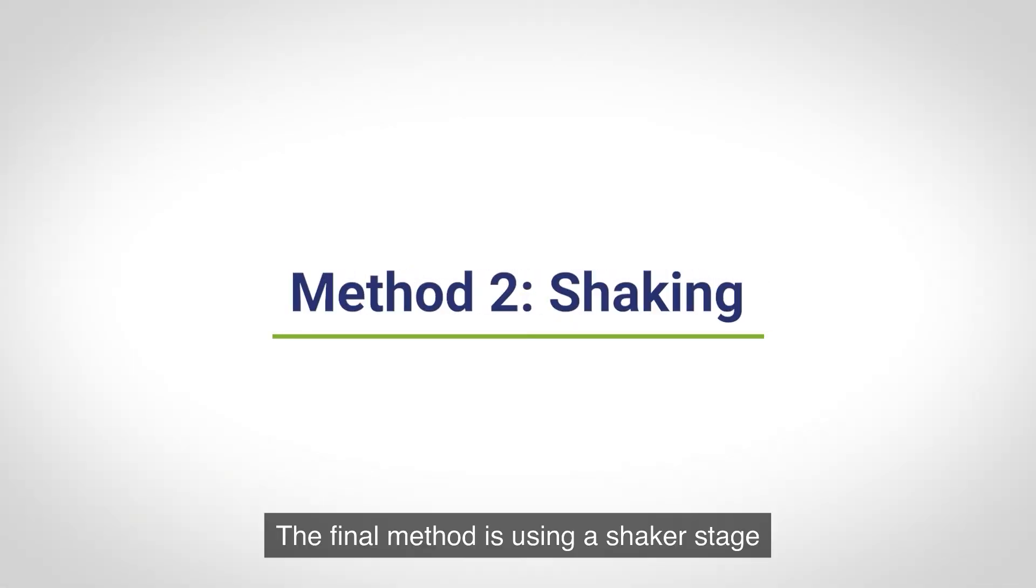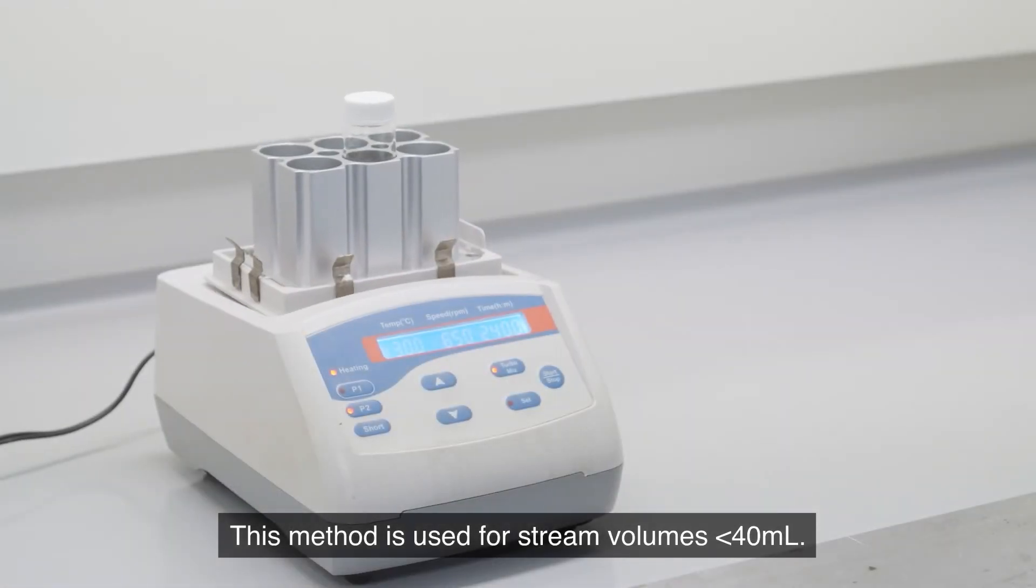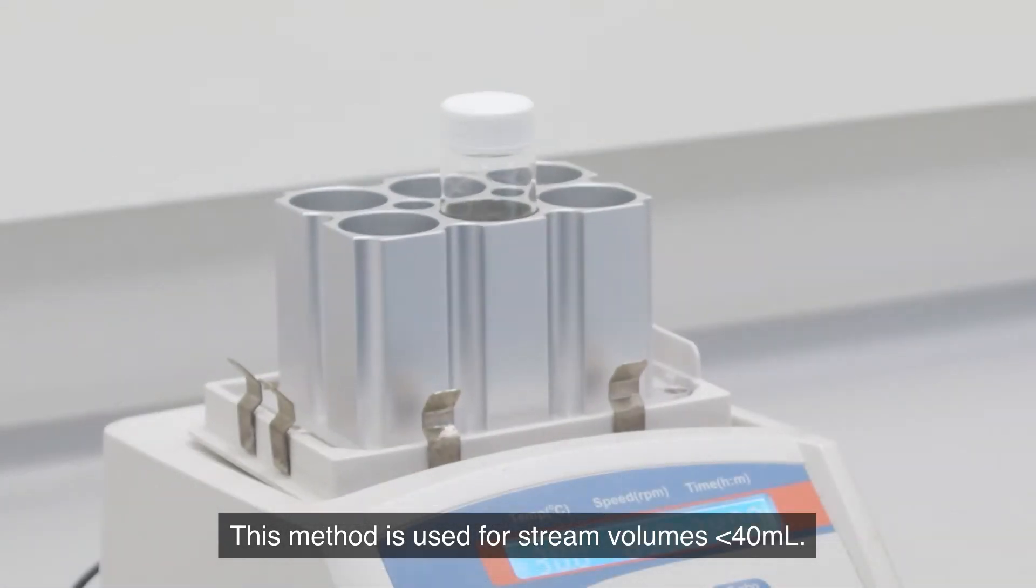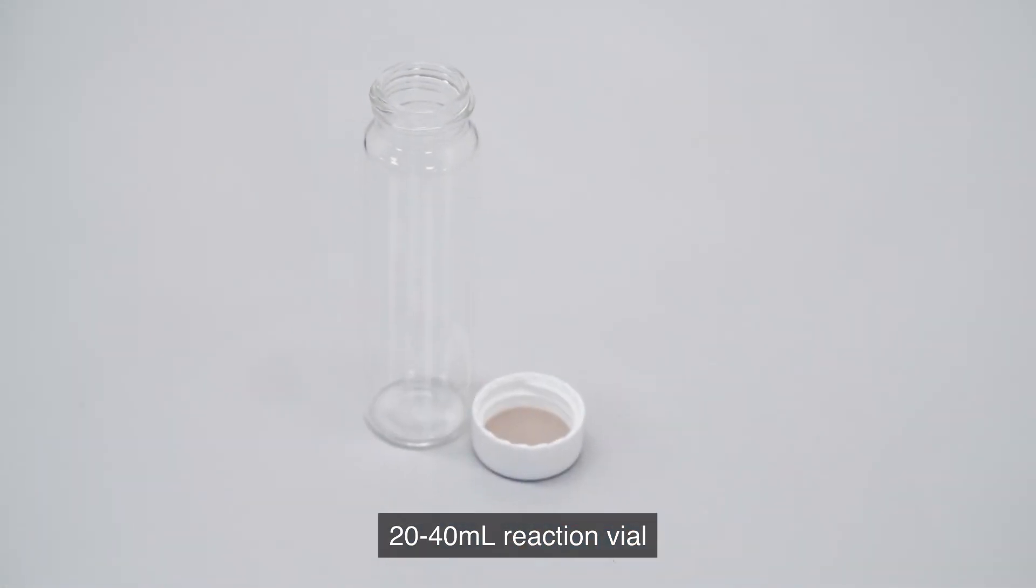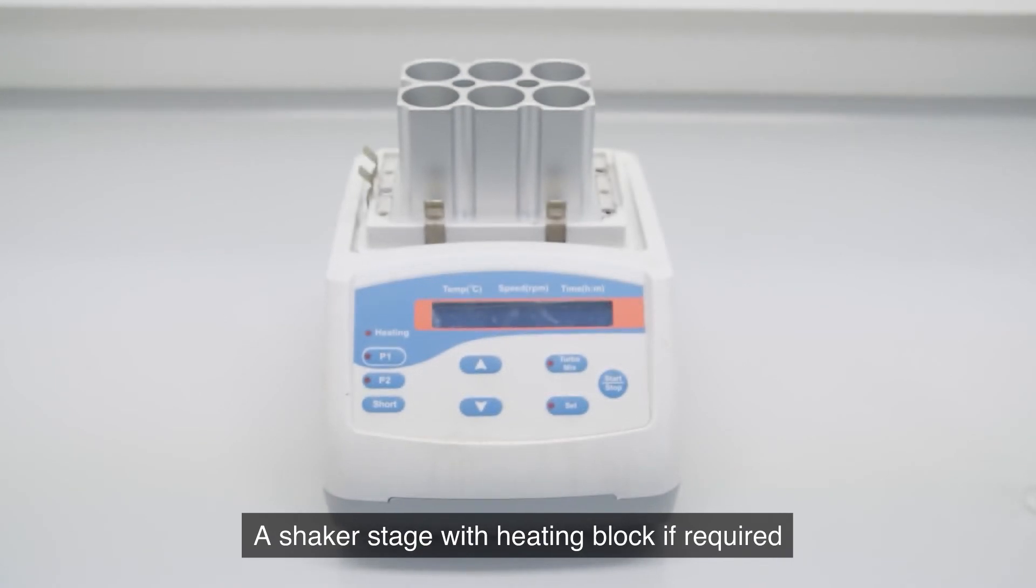The final method is using a shaker stage. This method is used for stream volumes below 40 mils. The equipment you will need is 20 to 40 mil reaction vial and a shaker stage with heating block if required.